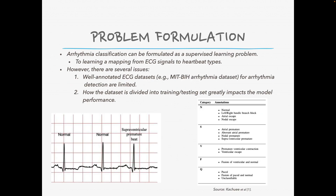Problem formulation. Arrhythmia classification can be formulated as a supervised learning problem — in other words, it is to learn a mapping from ECG signals to heartbeat types. However, we encountered two issues in our study. The first issue is there's a limited number of well-annotated ECG datasets for arrhythmia detection. Secondly, how the dataset is divided into training and testing sets greatly affects the model performance.